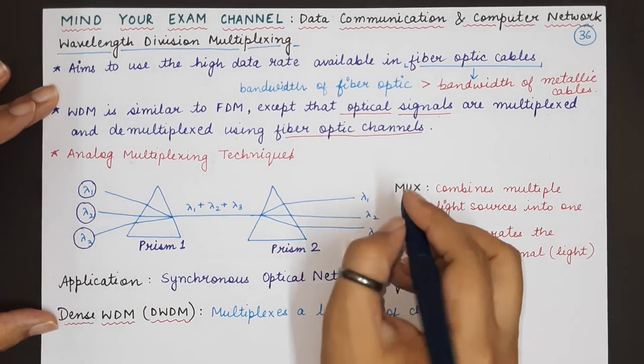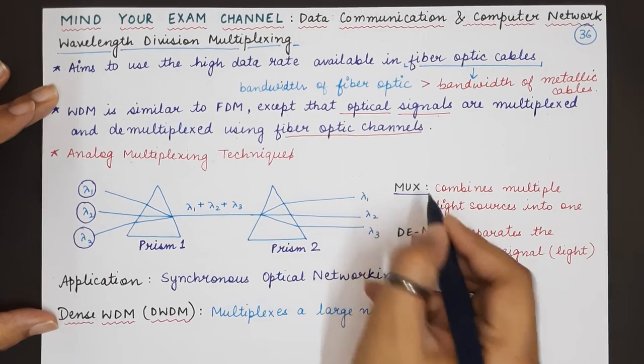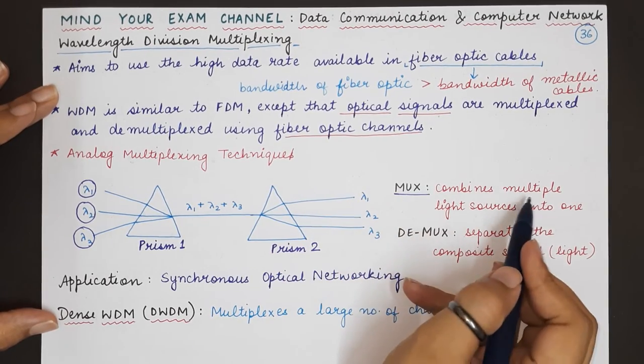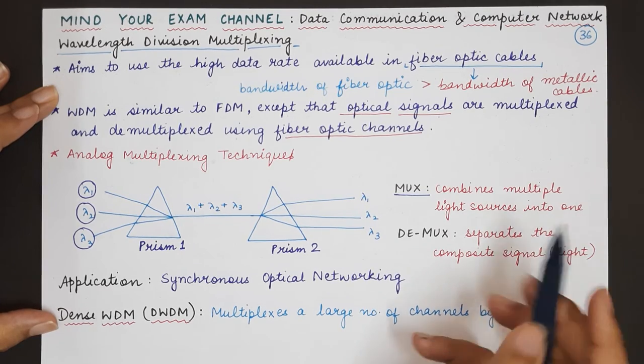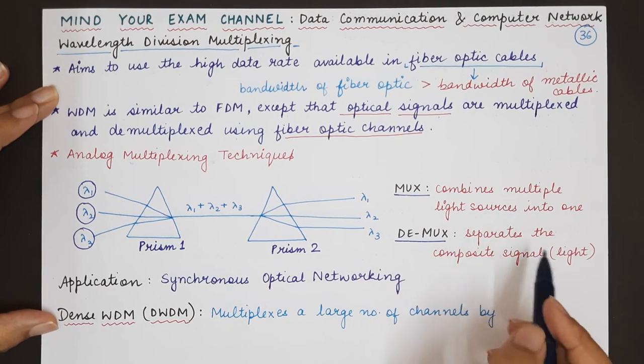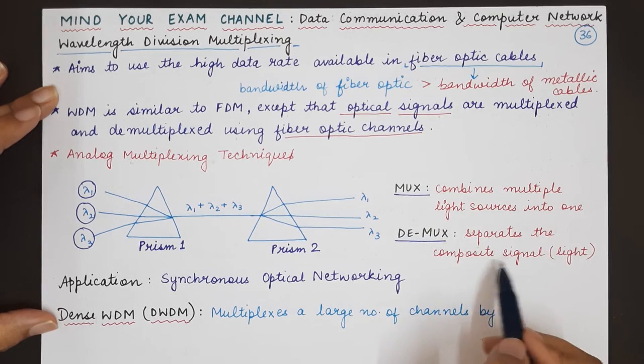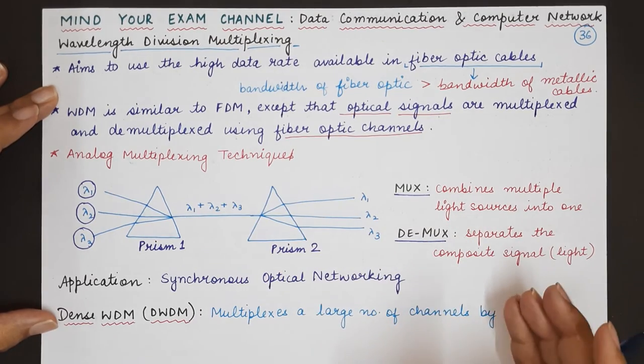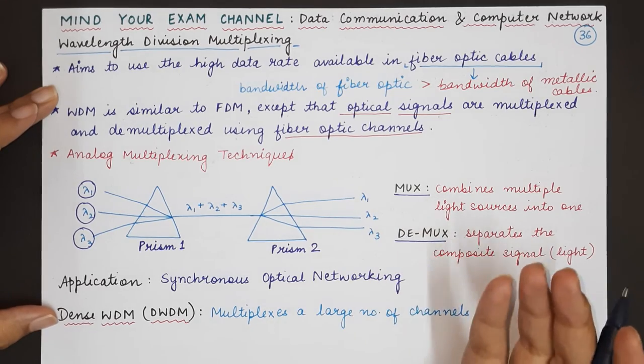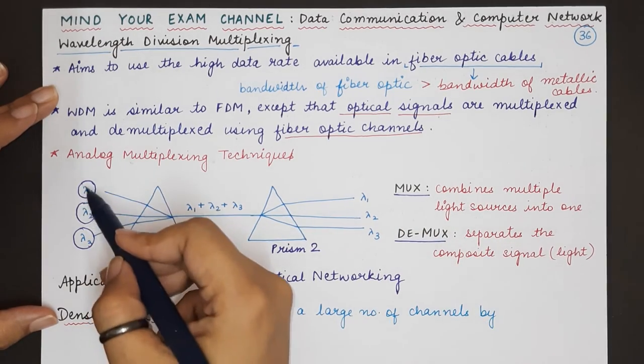This prism basically separates out each of the wavelengths and sends it to the corresponding receiver. So here the mux, the prism that is acting as a multiplexer will combine multiple light sources into one composite signal and the demultiplexer will separate the composite light signal into their individual optical signals having their original wavelengths.